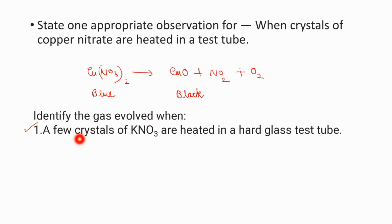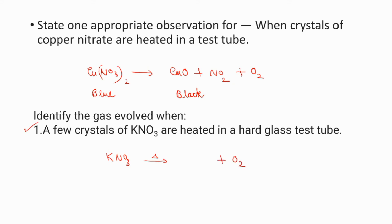Next question: identify the gas evolved when a few crystals of potassium nitrate are heated in a hard glass test tube. Potassium will be holding the nitrate ion more strongly, so it is difficult to evolve nitrogen dioxide. Instead, one oxygen is liberated and potassium nitrite is also formed. The answer: the gas evolved is oxygen.